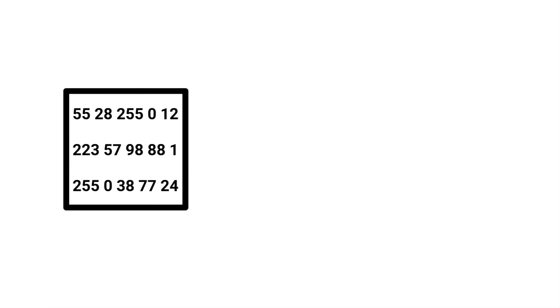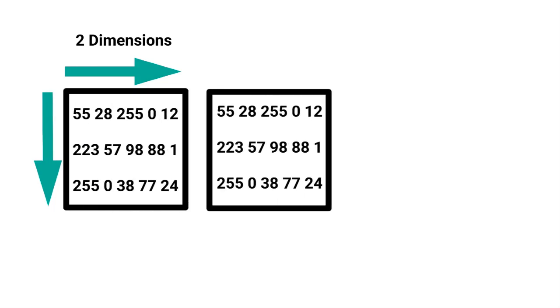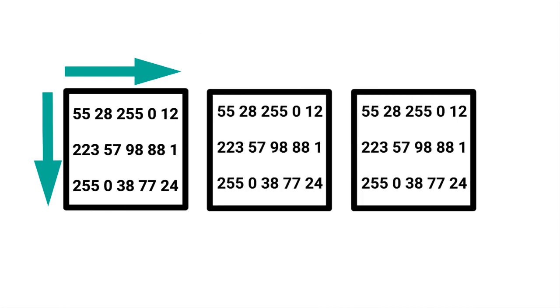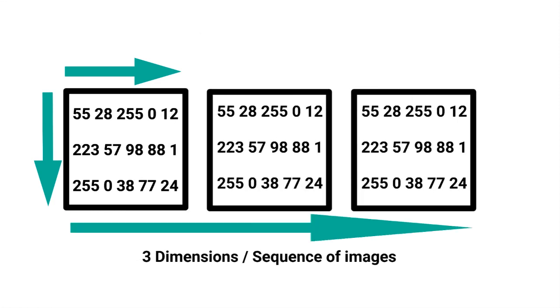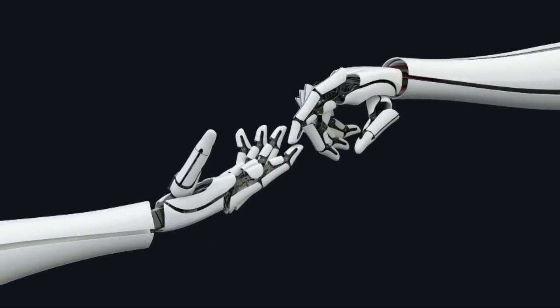An image is nothing more than a series of numbers — pixel values that range from 0 to 255 — arranged across two dimensions: height and width. In order to feed video into my neural network, I'm taking a video and chopping it up into sections of 30 frames. You can think of it like stacking a series of images across a third dimension, and then these chunks of 30 frames get fed into the GAN. My input video is a simple video with a black background and some robot hands moving and touching, and this is what I'm feeding into my GAN.